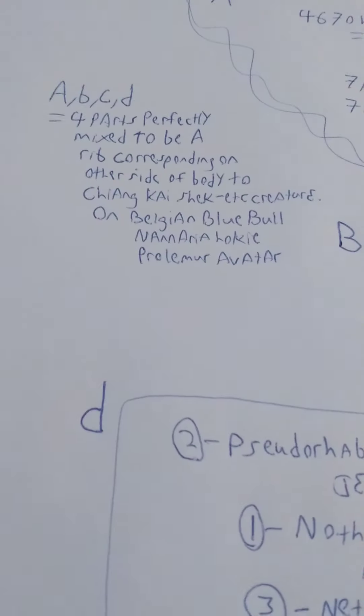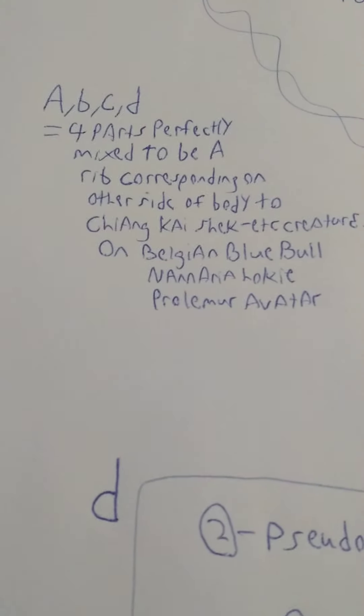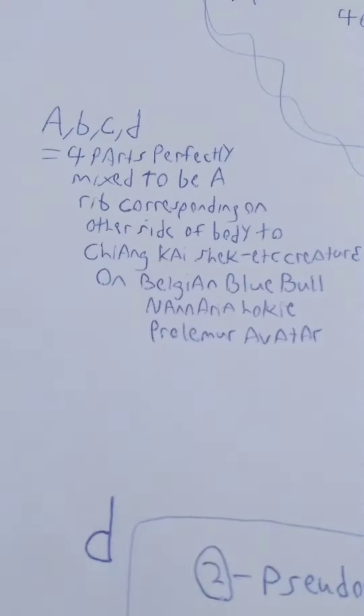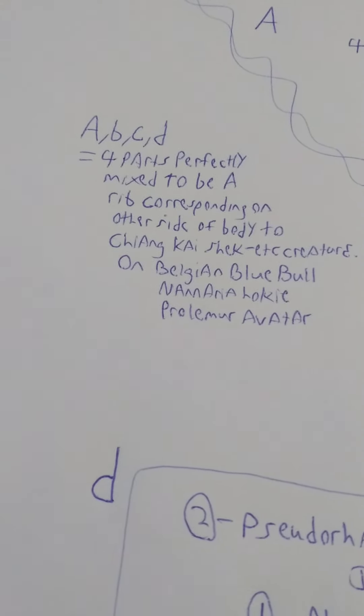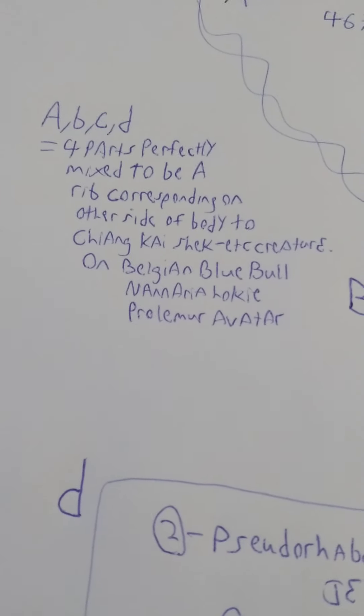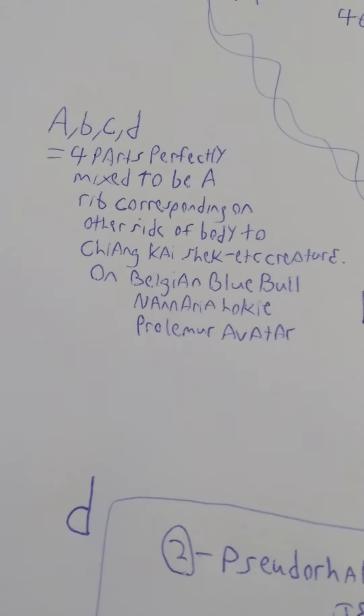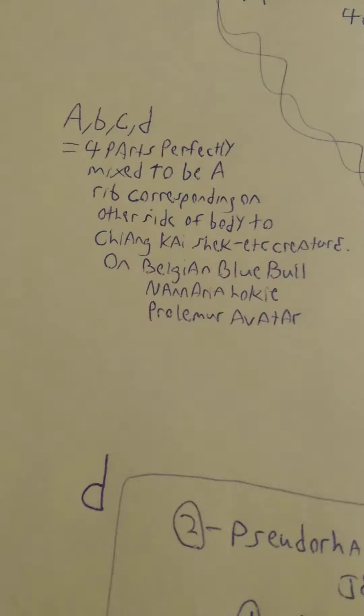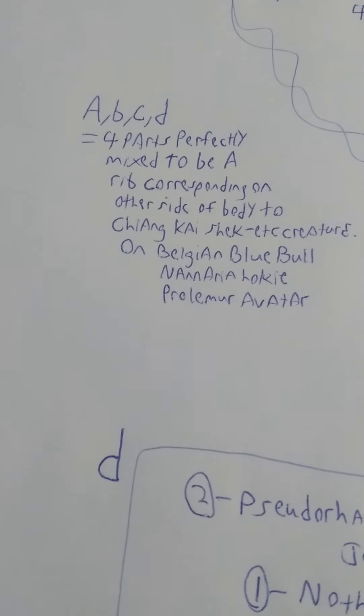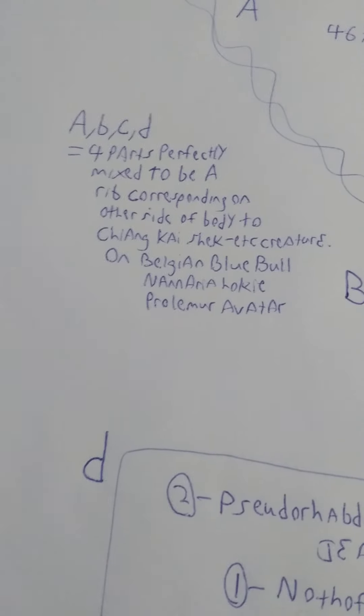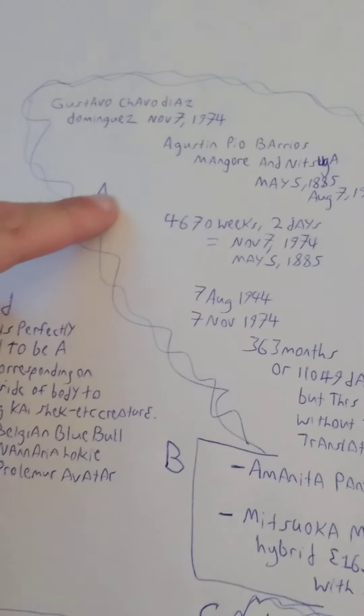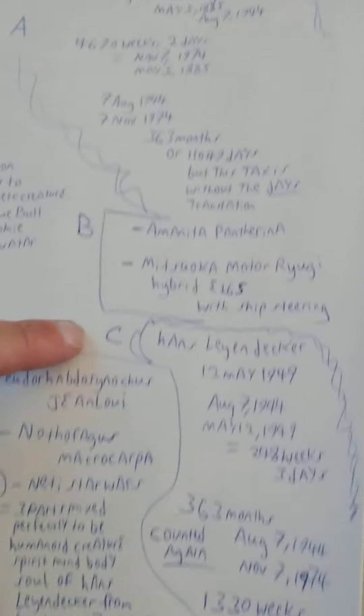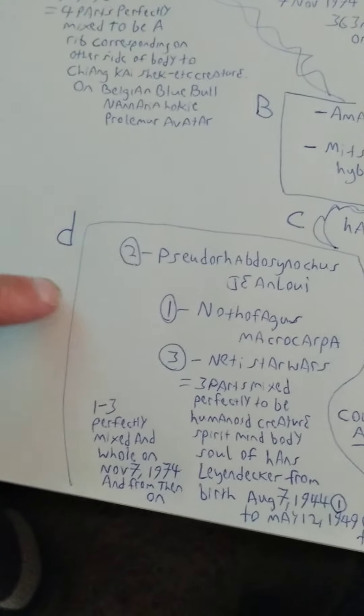Let's take a look at a few things. A, B, C, D equal four parts perfectly mixed to be a rib corresponding on other side of body to Chiang Kai-shek etc. creature on the Belgian Blue Bull in an area, hokey, Prolemor Avatar.